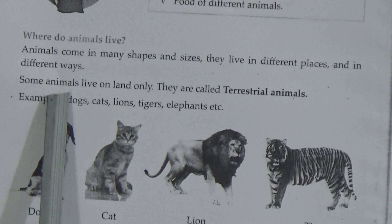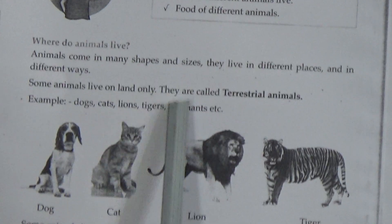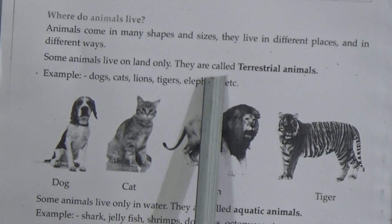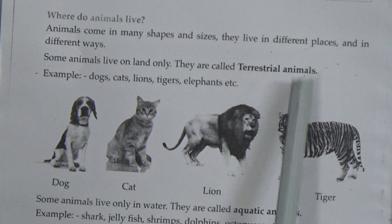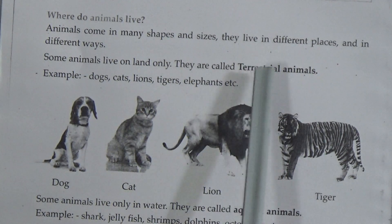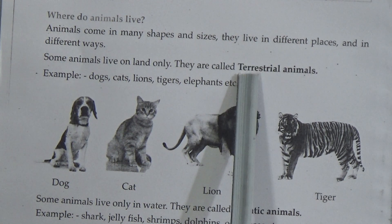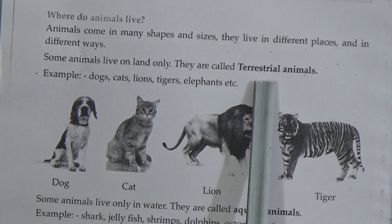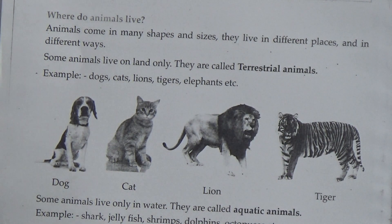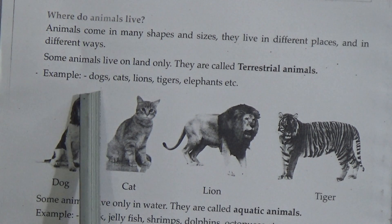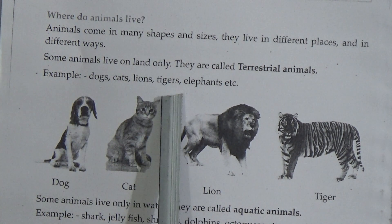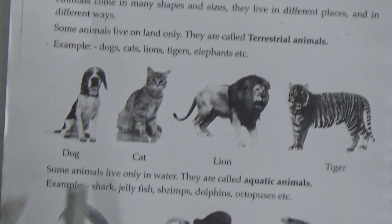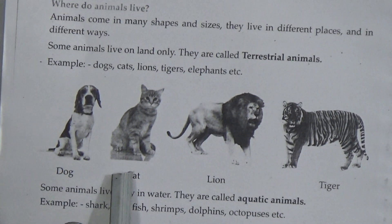Some animals live on land only. They are called terrestrial animals. The spelling of terrestrial is T-E-R-R-E-S-T-R-I-A-L. Terrestrial animal. Here is the picture of dog, cat, lion, tiger.